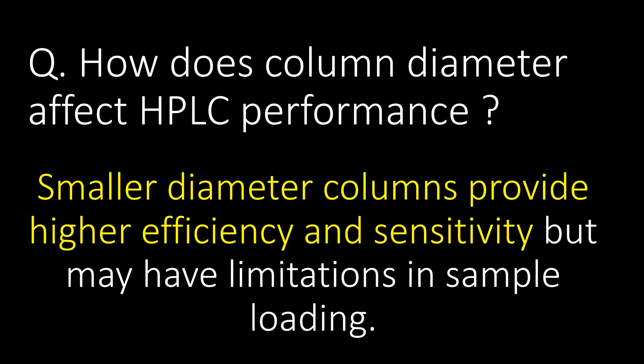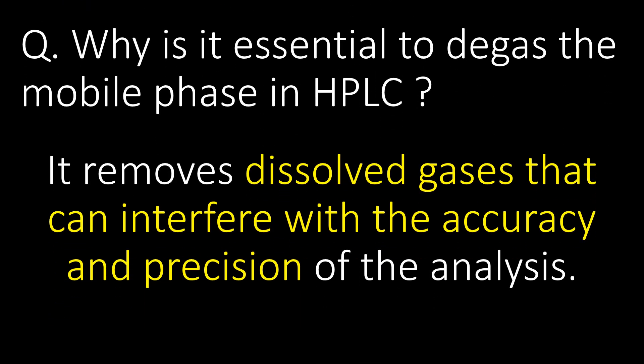How does column diameter affect HPLC performance? Smaller diameter columns provide higher efficiency and sensitivity but may have limitations in sample loading. It is essential to degas the mobile phase in HPLC because it removes dissolved gases that can interfere with the accuracy and precision of the analysis.